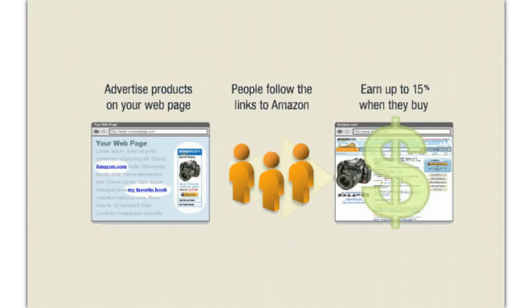It's a similar program except here you're able to use links, and those links are tracked automatically. Then Amazon will pay you for each purchase that is made through their website. Those purchases generally for any general products are going to be somewhere between 4% and 8.5% of the purchase price. For some products it can be up to 15%, generally products like Kindle books that have a very high margin for Amazon.